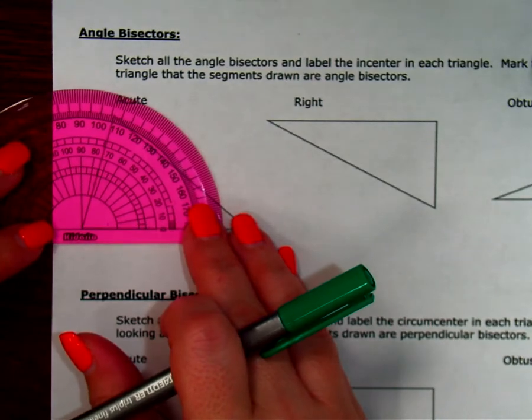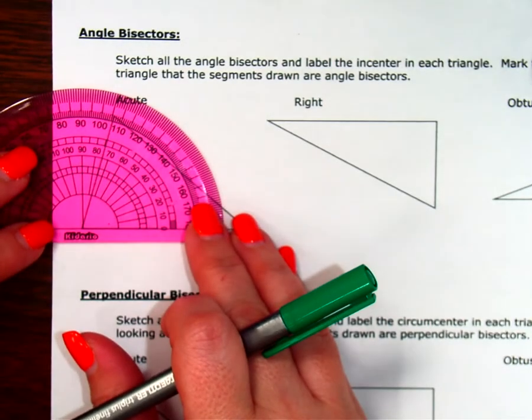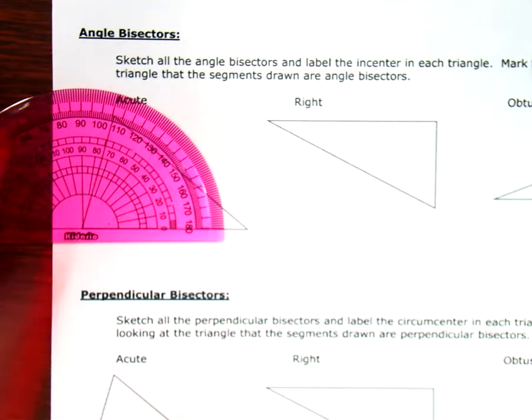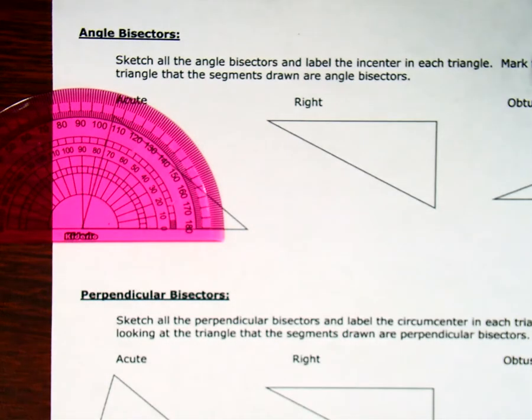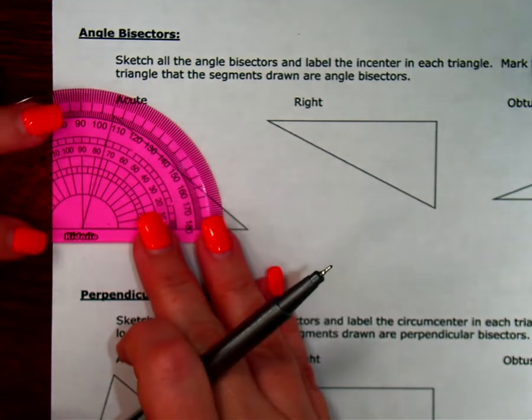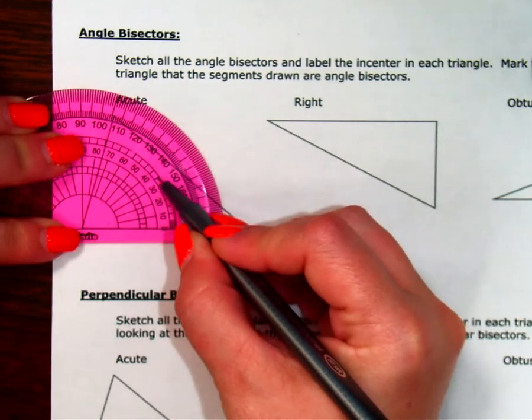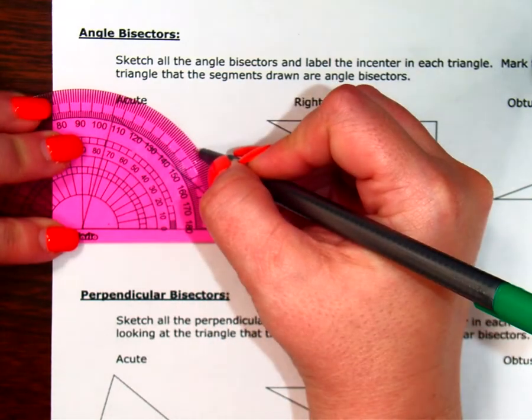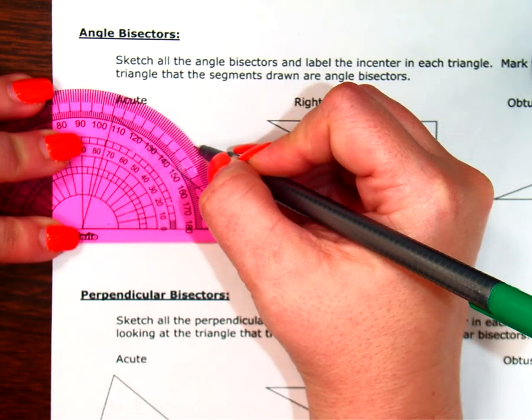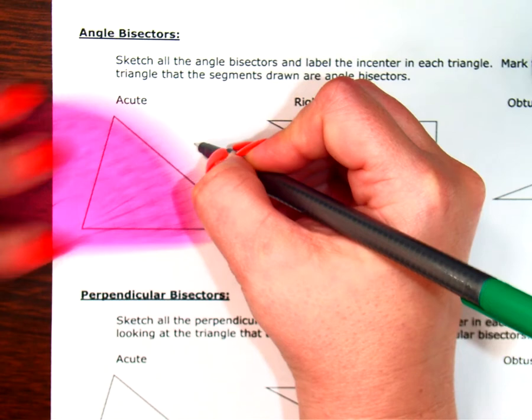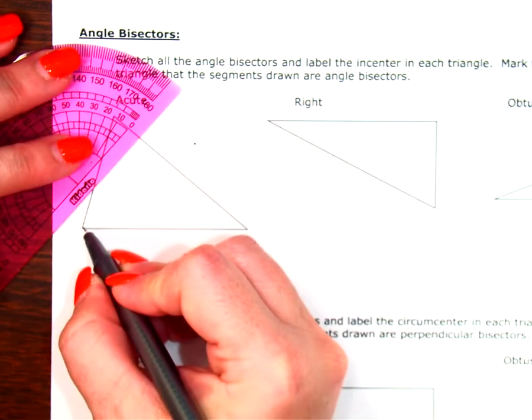So I'm going to line my protractor up here and measure it. And it looks like this is 75 degrees, this angle. So I'm going to take 75 and divide it in half and I get 37.5. So when I measure this angle, 37.5, 10, 20, 30, this is 35. So 36, 37.5 is right about there. And so my angle bisector.